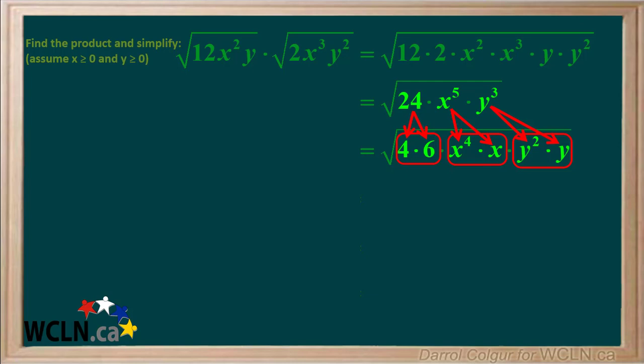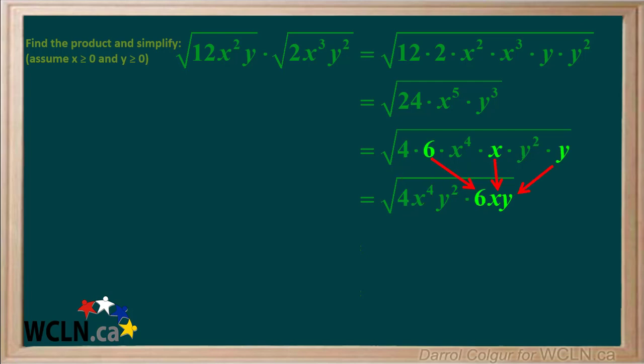Note that 4, x to the 4th, and y squared are all perfect squares. We'll group the perfect squares 4, x to the 4th, and y squared on the left side of the radical, and the leftovers 6, x, and y on the right side.